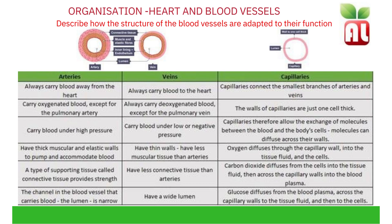Blood vessels — describe how the structure of the blood vessels are adapted to their function. Arteries have a narrow lumen and thick muscular walls. They always carry blood away from the heart. They carry oxygenated blood except for the pulmonary artery, and they carry blood under high pressure. They have thick muscular and elastic walls to withstand this high pressure. A type of supporting connective tissue provides strength. The channel in the blood vessel that carries the blood, known as the lumen, is narrow.